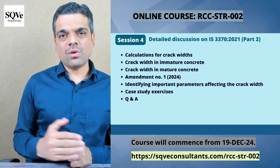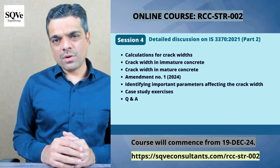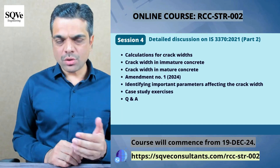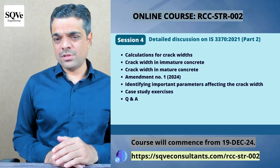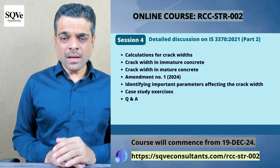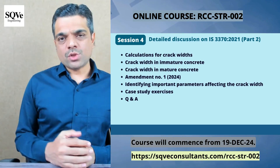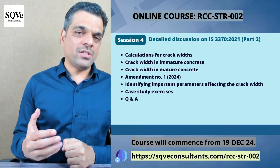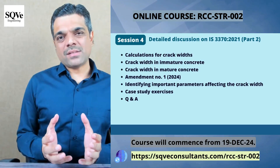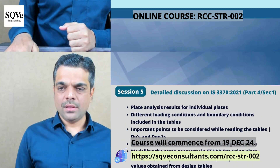From this session onwards we will be performing a number of manual calculations. We will perform detailed calculations for crack width for immature concrete as well as mature concrete with reference to IS 3370 Part 2. Based on these calculations we will do a number of iterations to identify important parameters impacting crack width, and exercises will be given to participants to ensure effective learning.